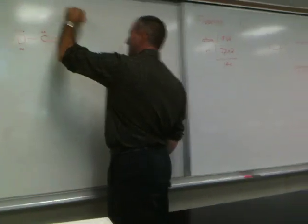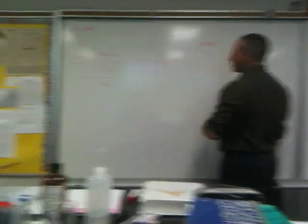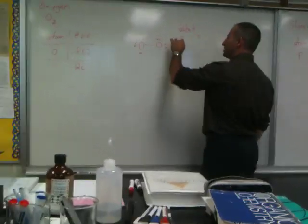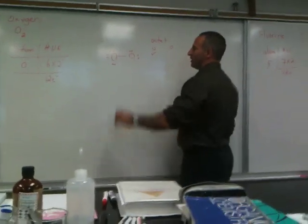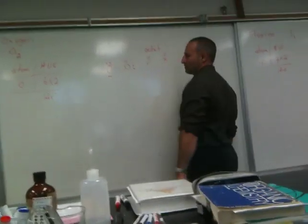So let's look at the octets. The left oxygen atom and the right oxygen atom. The left oxygen atom has two, four, six, eight electrons. So the octet requirement is fulfilled. But the right one has only two, four, six. So it does not have a fulfilled octet.